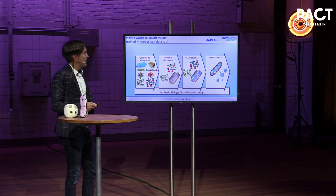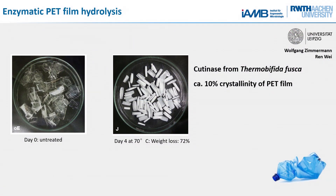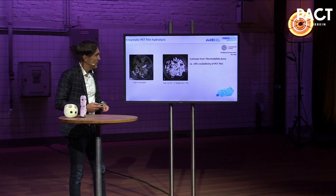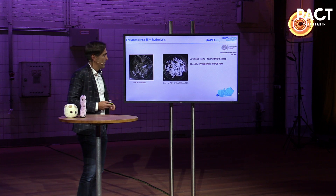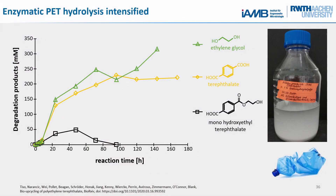Here there is a PET film treated by our colleagues. They use a certain enzyme catalyst, also from bacteria — specifically from a thermophilic organism that grows at 70 degrees. You see the color changes, and if you weigh it, there's a lot of weight loss. So it can really tackle this plastic. On the y-axis you have how much of the single constituents — the monomers — are produced. After 100 hours, the polymer is gone, the plastic is gone, and there are only monomers.